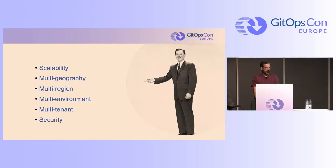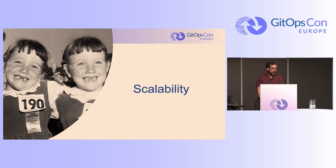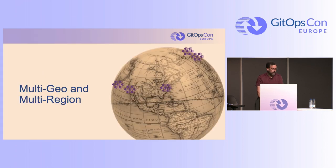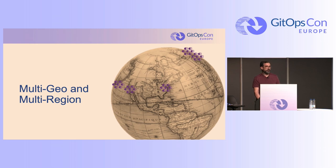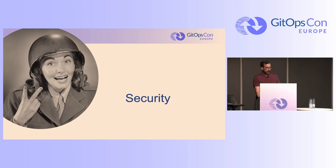We had a few key aspects to take care of when creating a new platform from scratch. One of those was scalability — we needed our clusters and workloads to scale automatically according to the load. We needed to create multi-geography and multi-region clusters to segregate data from different geographies and for data replication and redundancy. We have multiple environments — staging and production in all of those geographies — and we needed to enforce our security policies across all of these clusters.